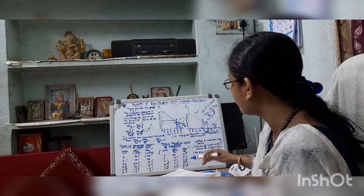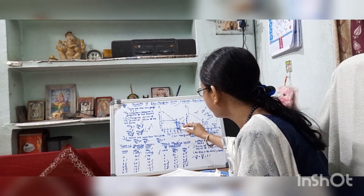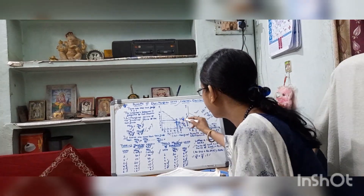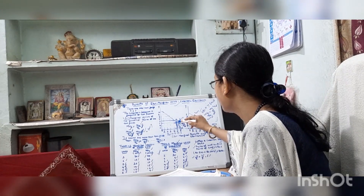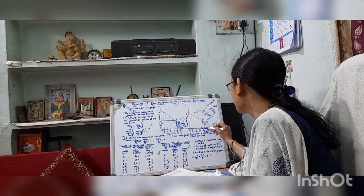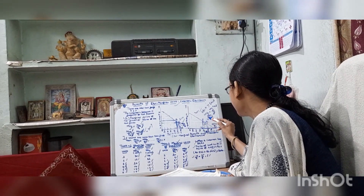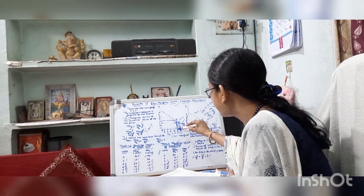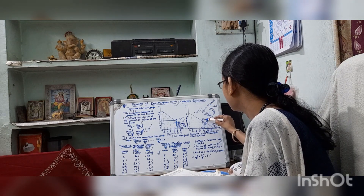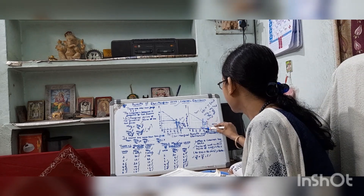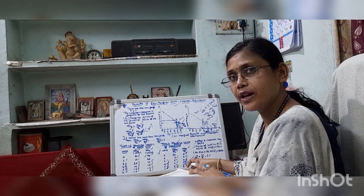If the consumer consumes only 5 units of X, the area A-B-C-H represents the lost area of total utility. If the consumer consumes 5 units of Y, then the gain is shown by area K-E-N and the loss A-B-C-H is greater than E-K-L-E. So if the consumer substitutes X for Y, then the consumer will reach equilibrium where MUX/PX equals MUY/PY.